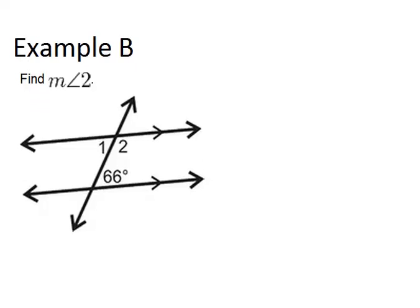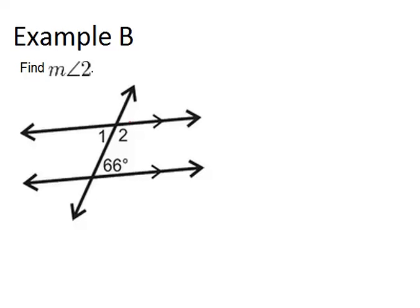Okay, example B. Find the measure of angle 2. Well, angle 2 and the 66 degree angle are same side interior angles. And I noticed that the lines are marked as being parallel. So, that means, because they're same side interior angles, and the lines are marked as parallel,